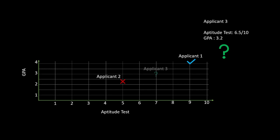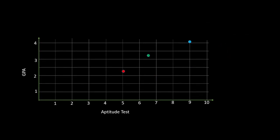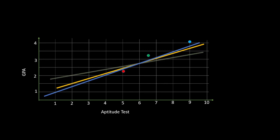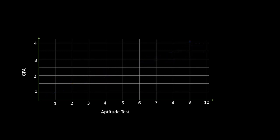Looking at our old example: applicant three had an aptitude test of 6.5 and a GPA of three. Somewhere in this linear regression we're able to make a reasonable guess as to whether or not they're going to get accepted as an officer. We can draw a line here — the goal is to identify all the components of this slope. You might ask: how did you arrive at this particular line and not another? Ultimately the algorithm chooses this line — our line of best fit.